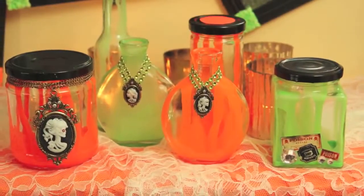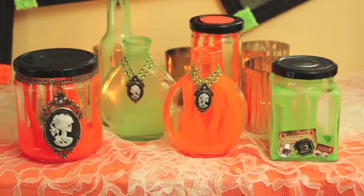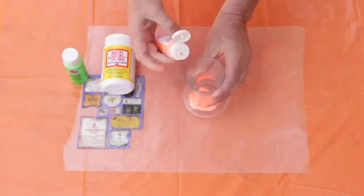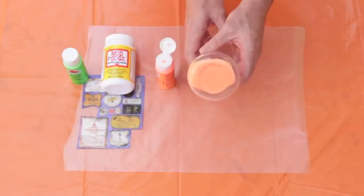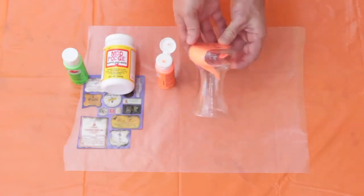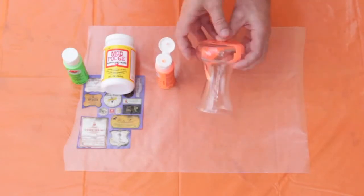Our potion bottles were made from dollar store frames and recycled jars. We painted the lids and glued embellishments to the vessels. To get the potions, we swirled neon paint in the vases and let it dry.